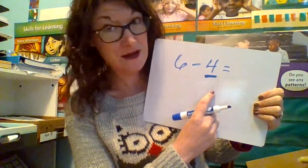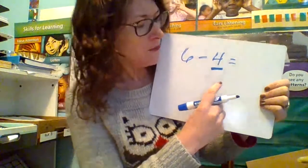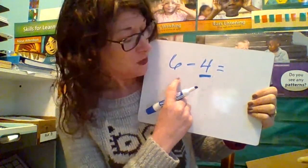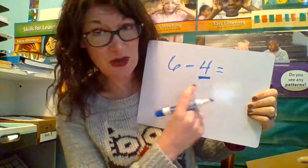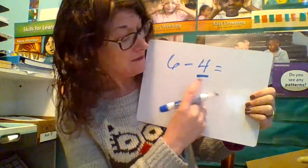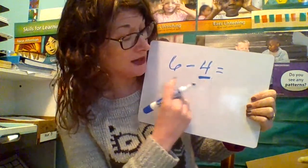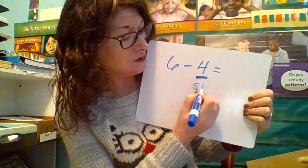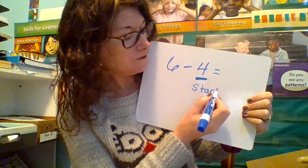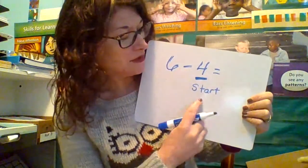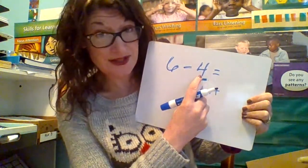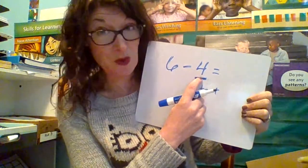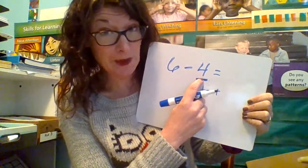For the counting on strategy with subtraction, we're going to go from the right to the left. We're going to be counting up to find out what is the difference between these quantities — between 4 and 6. So we're going to start with this number 4. Instead of grabbing the big number, whatever number is on the right is what we're going to grab.